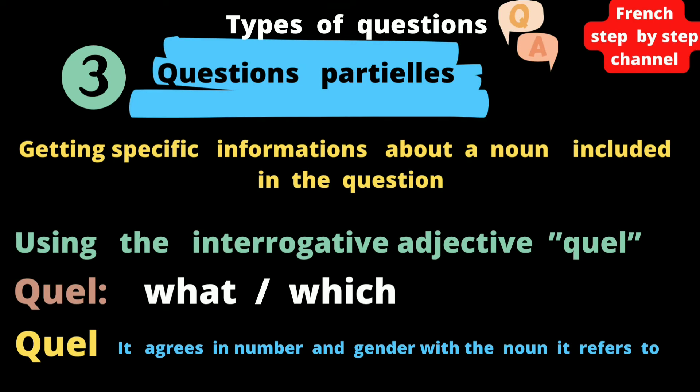Questions partielles — partial questions. This type is used to ask for specific information about a noun included in the question. We use here the interrogative adjective quel, which means 'what' or 'which'.